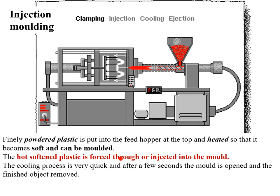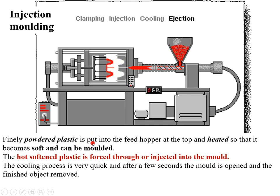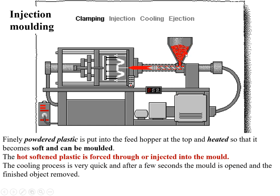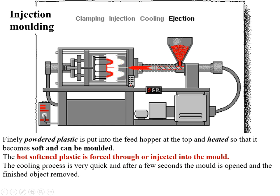Let's begin with injection molding. Here is a gif from the internet showing injection molding clearly. This is the hopper in which we feed powdered plastic with all the ingredients — whatever mixture we want. Then there is the heating coil because of which the plastic melts; on heating, the plastic becomes soft.